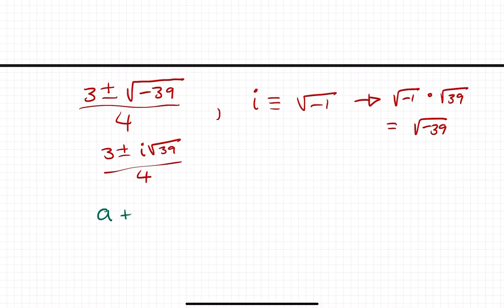But, if you want to go ahead and write that out in the perfect complex number form, a plus bi, we'll go ahead and need to separate that into two fractions to show the real part and to show the imaginary part. So, what that's going to look like here is 3 fourths plus or minus i root 39 over 4.